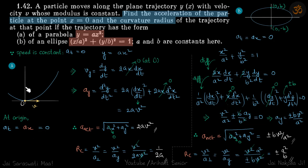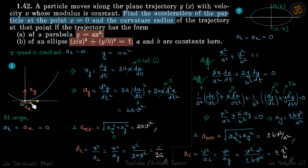We are breaking the acceleration into two components: one in the y direction called ay, and one in the x direction called ax. The acceleration in the x direction is the tangential acceleration, and since tangential acceleration is 0, ax is also 0. So we need to find ay.